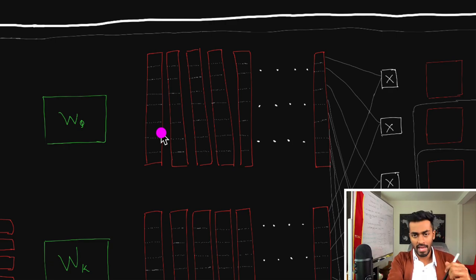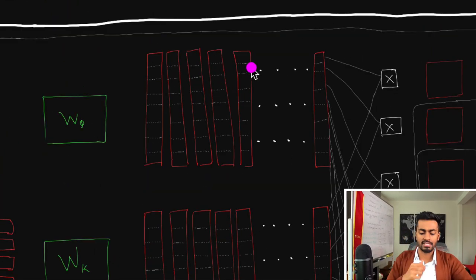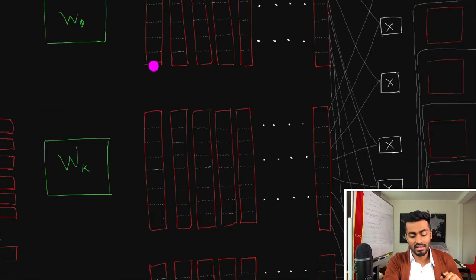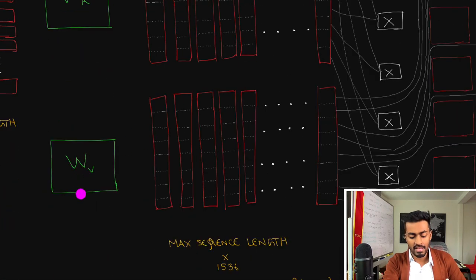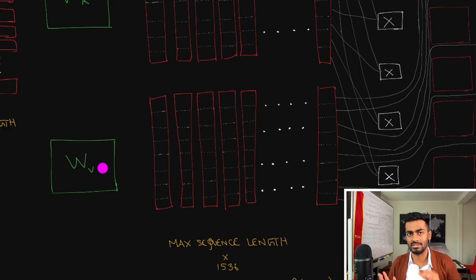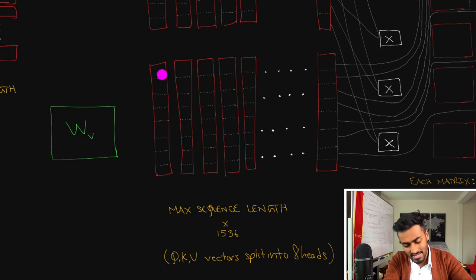We end up with the same type of vectors for query, key, and value. The query vector for every word represents 'what I am looking for.' The key vector represents 'what I can offer,' and the value vector represents 'what I actually offer.' The key and value vectors are similar, but they differ in how they're used during attention computation. Each of these little squares is 512 ÷ 8 = 64-dimensional vectors that we compute attention with.